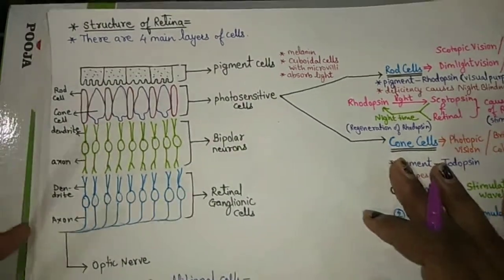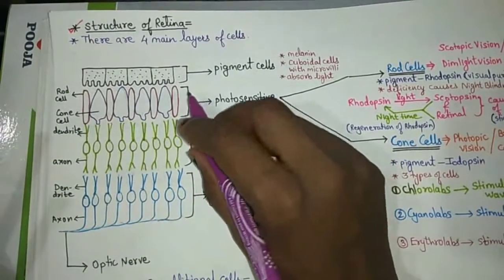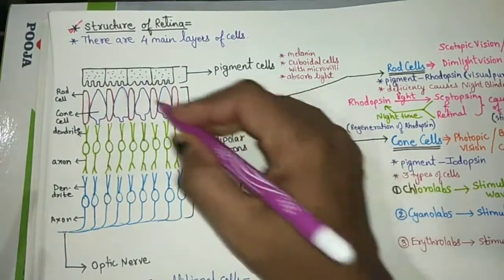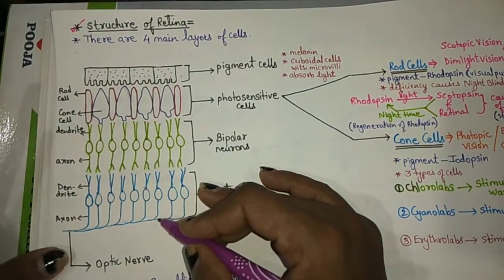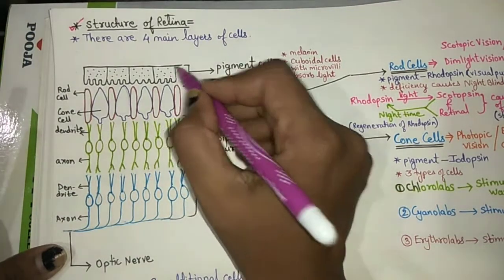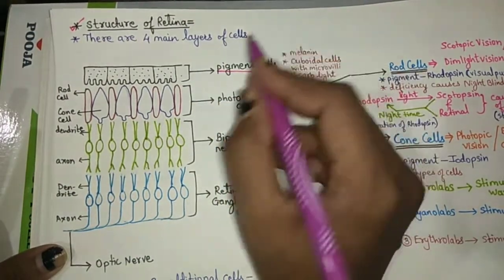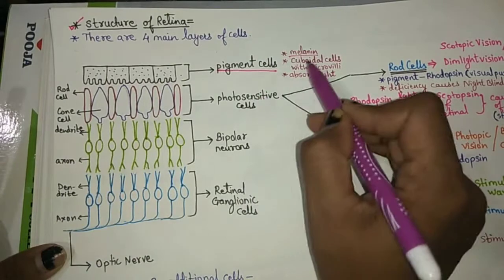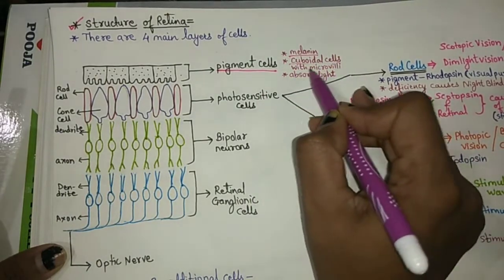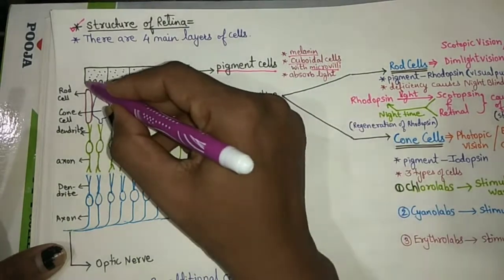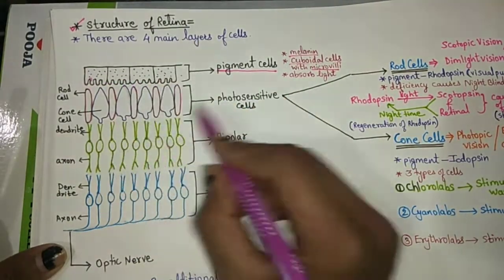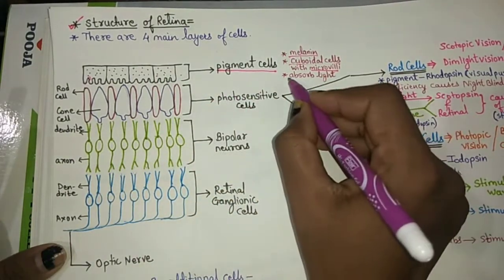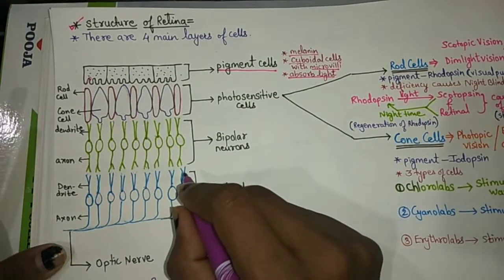Next, we look at the structure of the retina. The retina shows mainly four layers of cells. The uppermost layer is the pigment cell layer. These cells contain melanin pigment, are cuboidal in shape, and have microvilli on them. The function of these pigment cells is to absorb the light that falls on them.